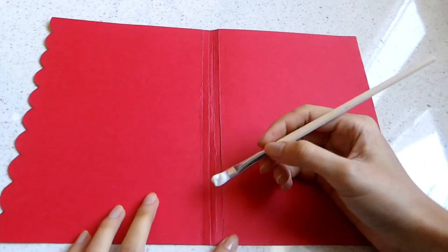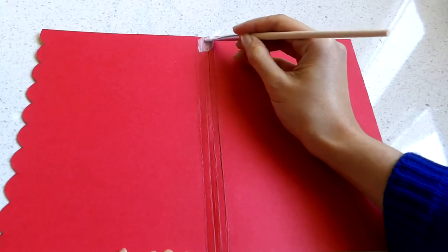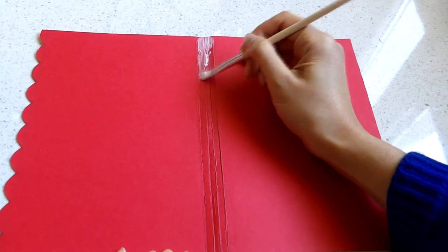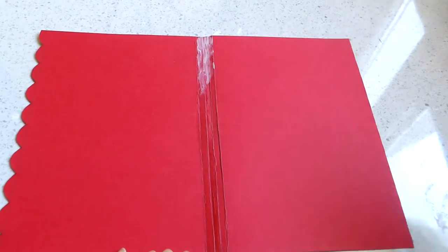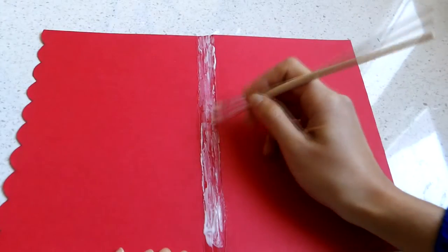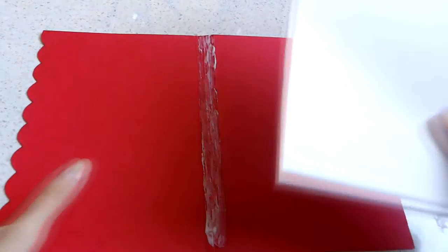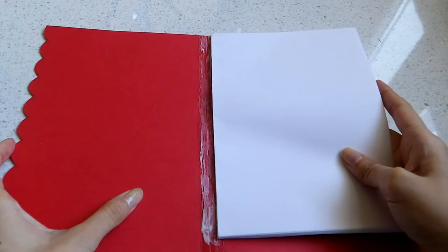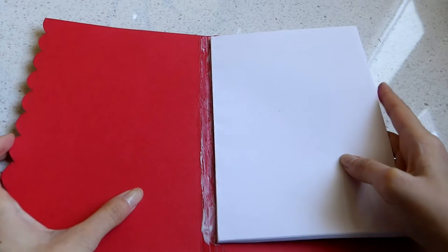Once the glue has dried, we can now go ahead and attach the block of papers to the notebook's cover. I'm using a brush to spread some glue along the folds of the cover. Place the block of pages on top of the cover and make sure it sticks well.